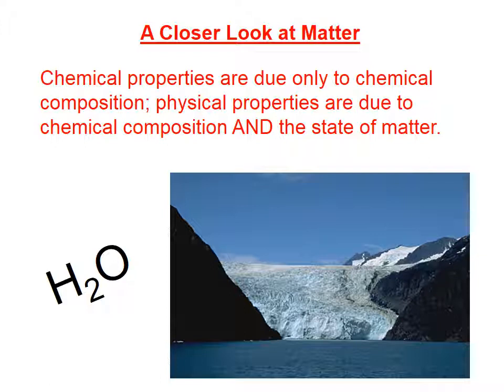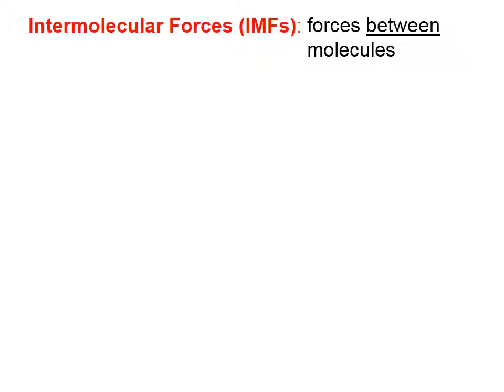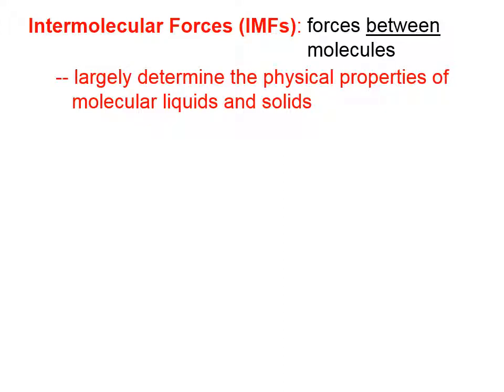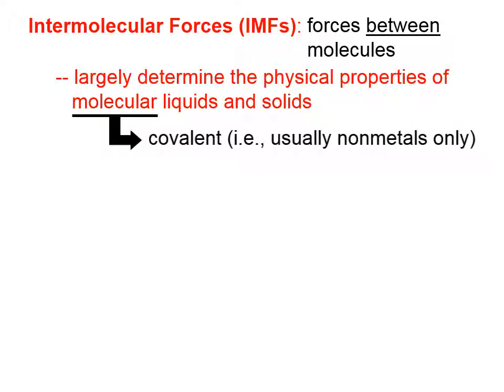Chemical properties are due only to chemical composition. Physical properties are due to chemical composition and the state of matter. Intermolecular forces, which I'll abbreviate as IMFs, are forces between molecules. IMFs largely determine the physical properties of molecular liquids and solids. When we say molecular, of course, we're talking about compounds that are covalently bonded, which usually contain only non-metals.